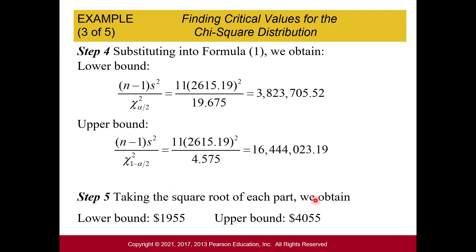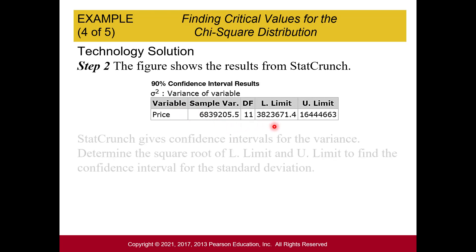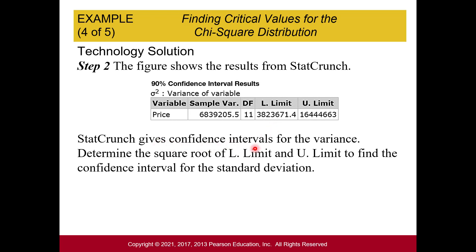We take the square root of each bound — remember these are variance bounds so we still need the square root. The lower bound is $1,955 and the upper bound is $4,055. You can do the same thing in StatCrunch: it gives the confidence interval for the variance, and then you take the square root of the lower and upper limits to find the confidence interval for the standard deviation.